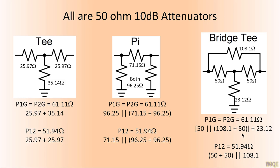Again, 61.11 ohms. P1-2, a little bit different. It's 50 plus 50, which is 100, in parallel with 108 and that gives us 51.94. From an outward perspective, all three of these attenuator types are exactly the same.